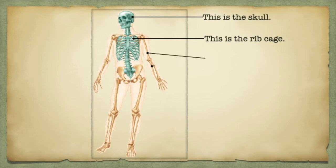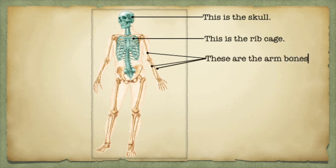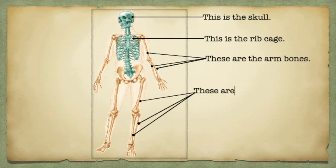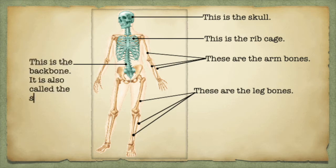The human skeleton has different bones. Can you see the skull? Can you see the rib cage? Can you see the limb bones? Limbs are arms and legs. Can you see the arm bones? Can you see the leg bones? Can you see the backbone? The backbone is also called the spine. Human beings have a backbone — they are vertebrates.